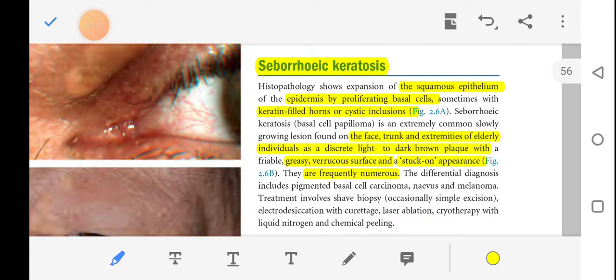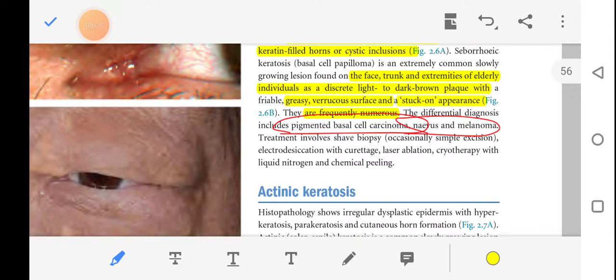They are very numerous. What is their differential diagnosis? Pigmented basal cell carcinoma, nevus, and melanoma. Treatment includes shave biopsy, occasionally simple excision, electrodesiccation with curettage, laser ablation, and cryotherapy with liquid nitrogen and chemical peeling.